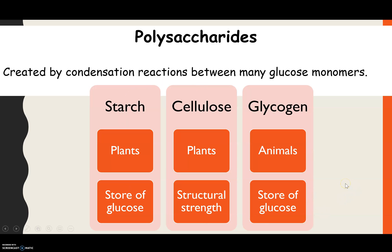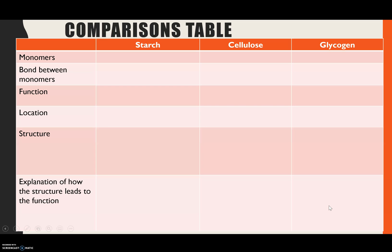That's surface level information which you may have remembered from GCSE. Today we'll go through in much more detail about the structure and how that links to these three functions. You'll need a copy of this table for your notes — it covers all of the key points from the specification and compares them across all three polysaccharides. Listen out for the monomers, the bonds, function, location, structure, and for the highest marks, linking structure to explain function. You may need to pause now to draw the table, then slot in the information as we go through, and at the end we'll go through the answers.